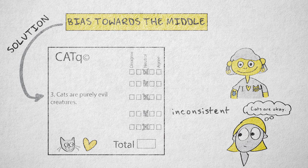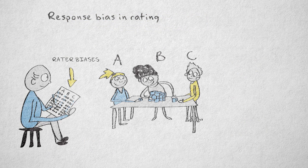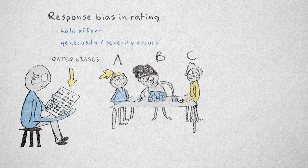Biases due to the mere act of responding to a test or questionnaire can also occur when a rater observes and rates behavior of others. There are many rater biases. I'll just discuss the halo effect and generosity and severity errors here.